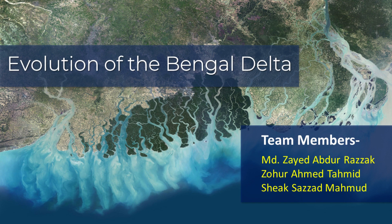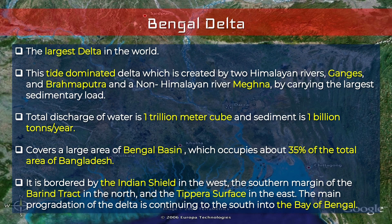Hello everyone. This presentation is going to be presented by me, Mohammed Zayed Abdur Al-Zag, and my fellow teammates Zahur Ahmed, Tahmid, and Shaykh Sadhat Mahamud. The Bengal Delta — the largest delta in the world — is tide-dominated and created by three rivers: the Ganga, Brahmaputra, and Meghna.